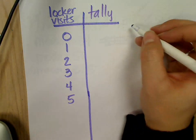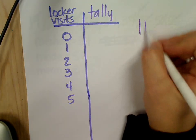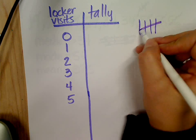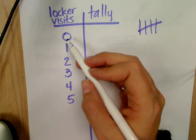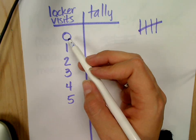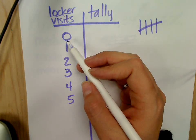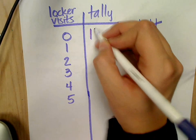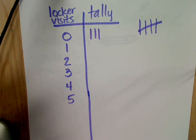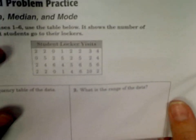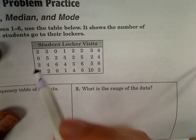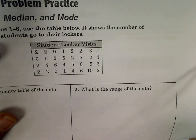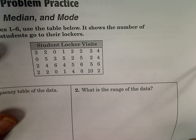You know how to make a tally mark? And then once you get to 4 you mark a cross to get 5. So how many people visited their locker zero times? One, two, three zeros is what I see on my table. See that? That's what we're talking about. Three zeros - I would cross them out once I'm finished with them.